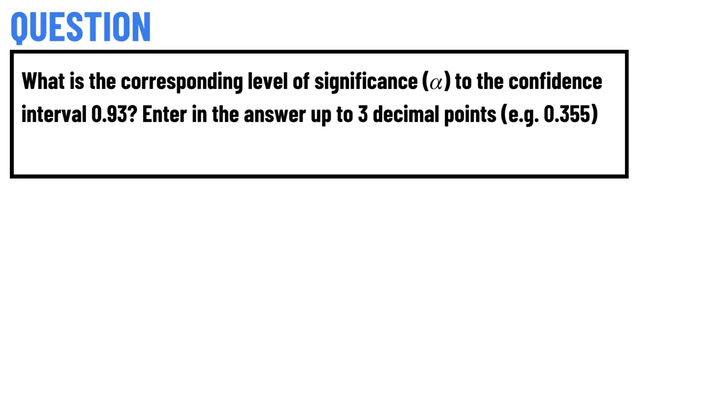Let's get to the questions. Today's question is: What is the corresponding level of significance (α) to the confidence interval 0.93? Enter the answer up to 3 decimal points.